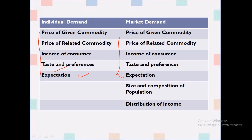Now let us understand market demand and its determinants. The first five factors are also part of market demand. Market demand is a broader concept compared to individual demand, which is a narrow concept. We can say that individual demand is a part of market demand.